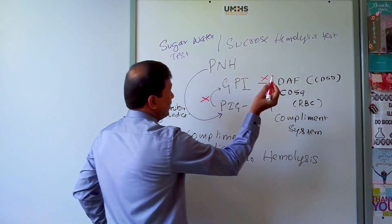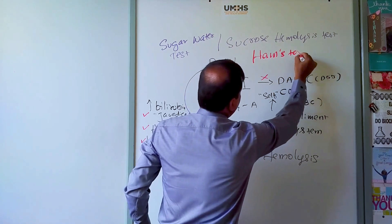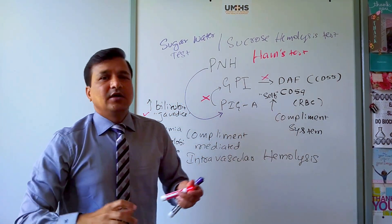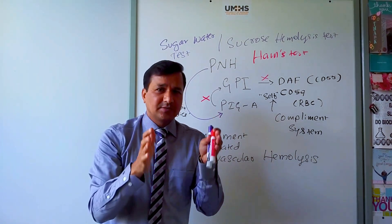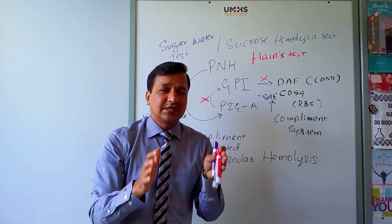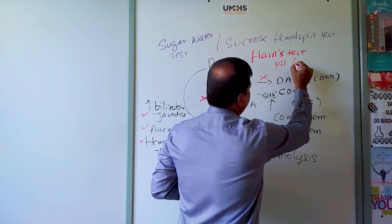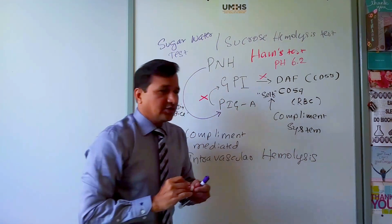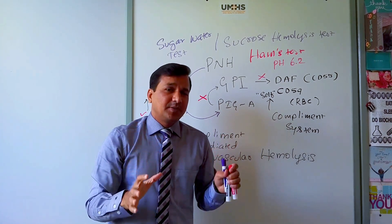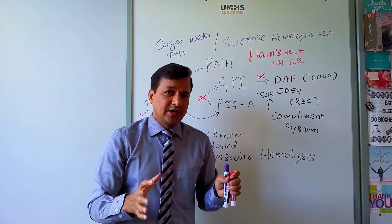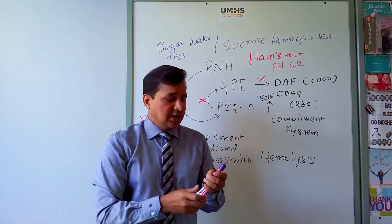The confirmatory tests for PNH include Ham's test. In Ham's test, the blood sample's pH is dropped to 6.2 — toward acidic. If the patient has PNH, the red blood cells will be lysed at this pH, which constitutes a positive Ham's test.